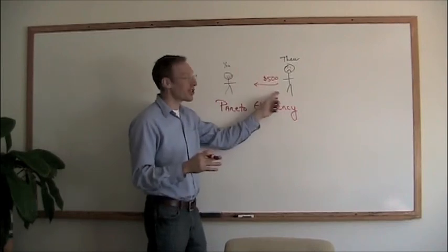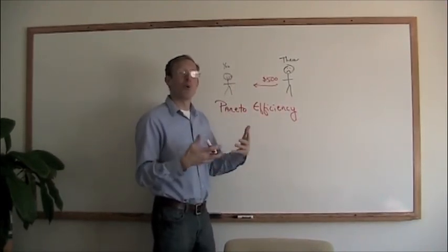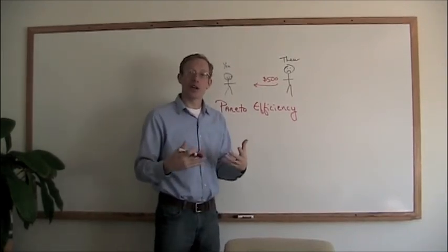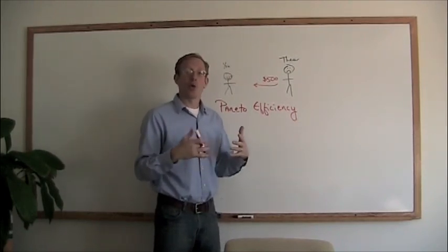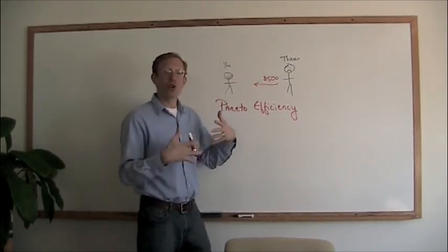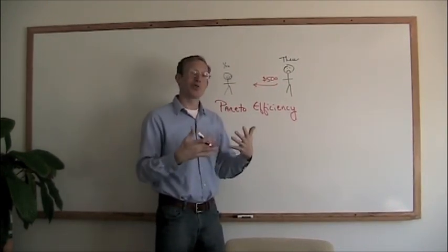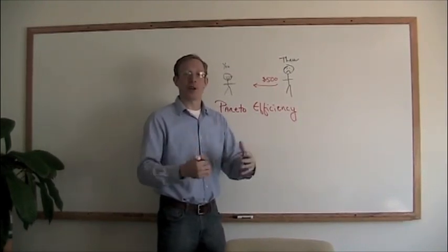But as long as one person can be made better off without hurting somebody else, then we are Pareto inefficient. And that Pareto criteria is kind of an interesting one to look at when we look at the way property rights are allocated, the way we look at how goods are distributed, whether it's in a capitalist system or a socialist system. Pareto efficiency is one of those criteria that we use to try to gauge the outcome of a transaction.